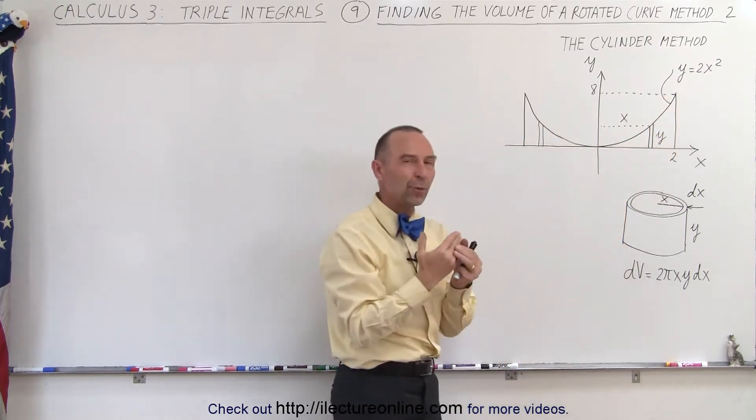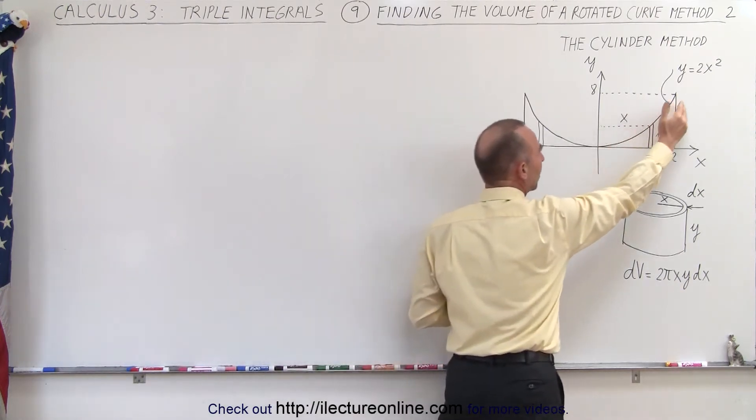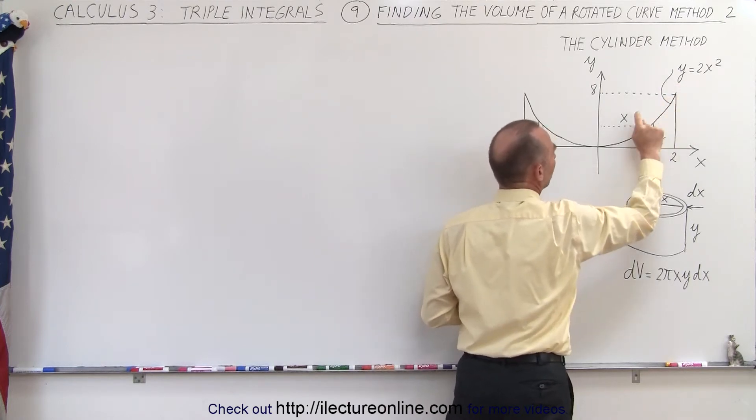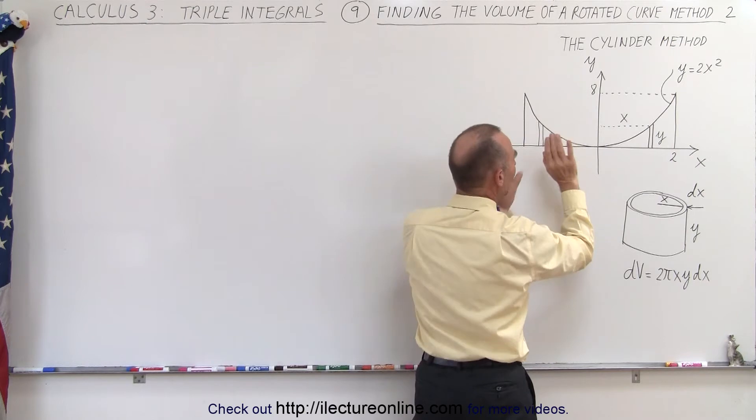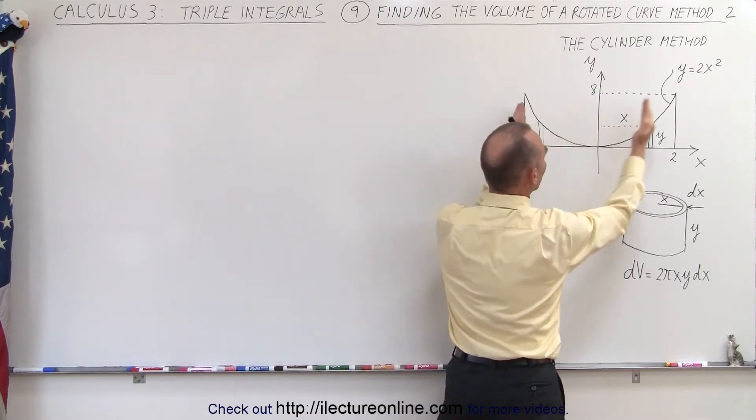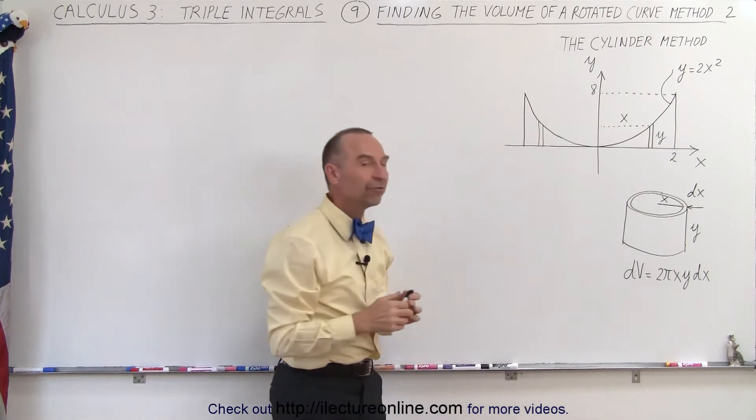Of course, in the previous video we did the same thing, but we had the z-axis going straight up, but the curve was the same. We had z equals 2x squared, here we'll call it y equals 2x squared, and as we rotate it around we end up with a volume like a bowl that has straight edges on the side here, and we're trying to find the volume of that.